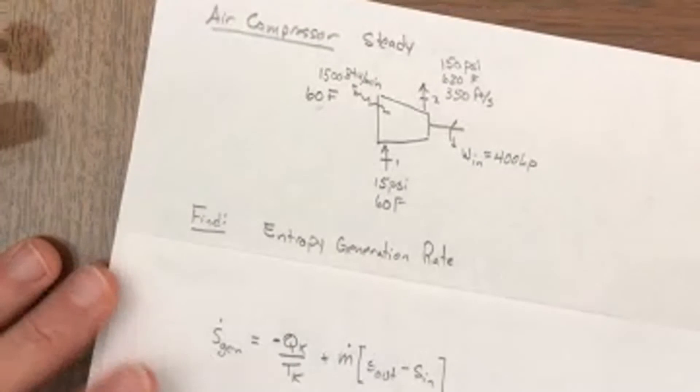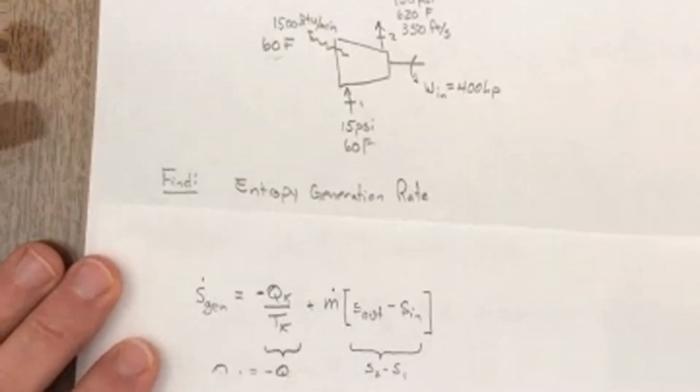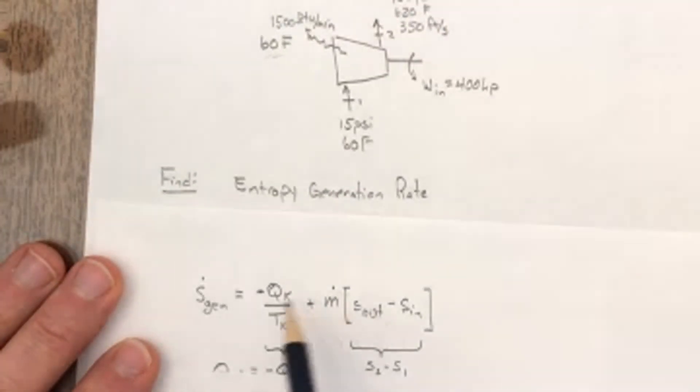But when we work with the entropy generation equation or the entropy balance, we do have to say, well, if it's out Q, then that would be put in as a negative number. So that negative and negative is going to become a positive.